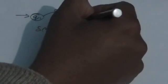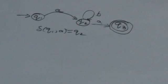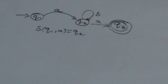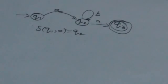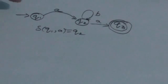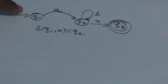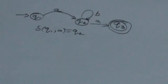Let us complete this automata. In this automata, Q1 is the initial state and Q3 is the final state. As already mentioned, final states can be one or more than one. For the initial state we put an arrow before it, and for the final state we encircle it.